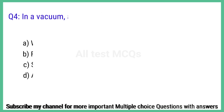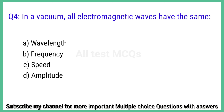Question number 4. In a vacuum, all electromagnetic waves have the same what? The right answer is option C: Speed.